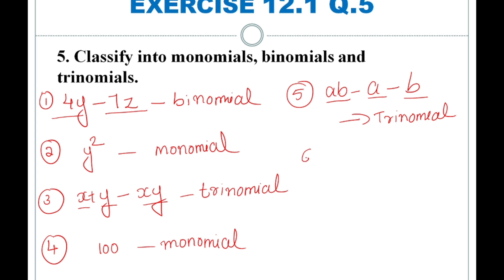The sixth expression is 5 minus 3t. There are two terms: 5 and minus 3t. An expression which contains two unlike terms is called a binomial, so this is a binomial. To summarize: 1 term is monomial, 2 unlike terms is binomial, and 3 terms is trinomial.